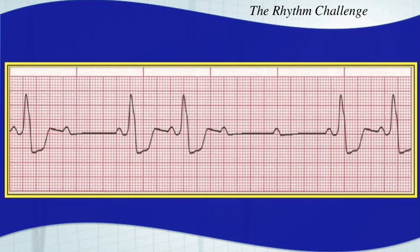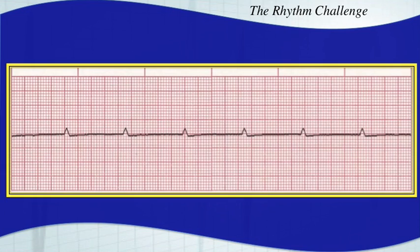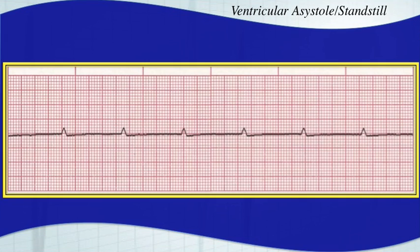This one is Mobitz II, secondary type 2 — you have a consistent PR interval with dropped beats. You may have never seen this next one before: it's a ventricular asystole, or ventricular standstill. You have P waves with no QRS complexes.